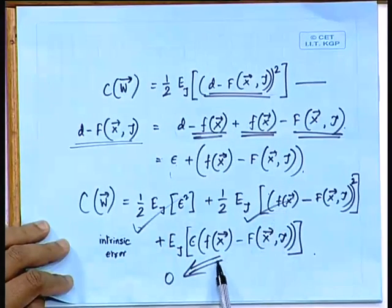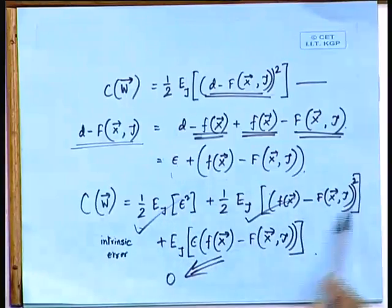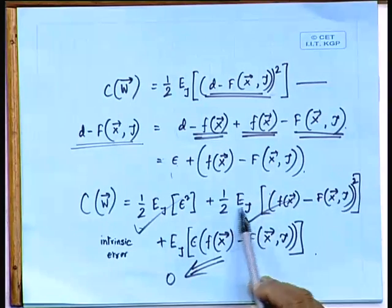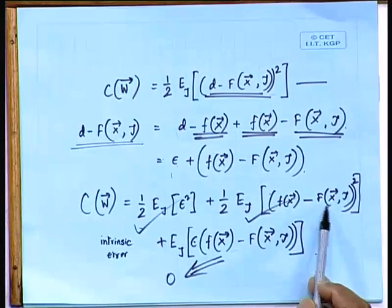This cross-term equates to zero, because the intrinsic error epsilon is uncorrelated with respect to both f(x) and the neural network realization f(x, τ). Since it is uncorrelated with respect to both, this term equates to zero. So we get C(w) as the sum of two expressions, and the intrinsic error term is certainly not varying with respect to w, so it will not contribute to any optimization with respect to the weight.